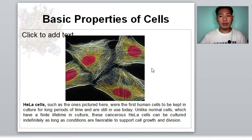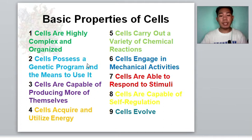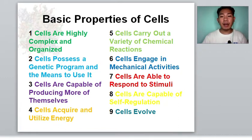This illustration shows the HeLa cells. In general, we have nine basic properties of cells. These are: cells are highly complex and organized; cells possess a genetic program; cells are capable of producing more of themselves; cells acquire and utilize energy; cells carry out a variety of chemical reactions; cells engage in mechanical activities; cells are able to respond to stimuli; cells are able to self-regulate; and cells evolve.